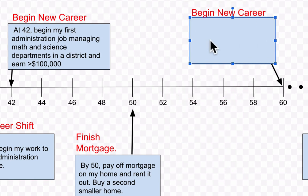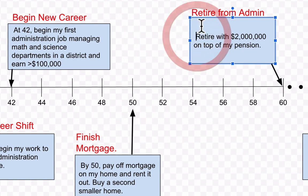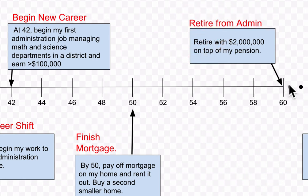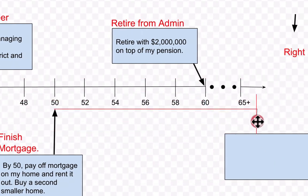Okay, what I can do is retire. So here this is my retirement. Yay! Retire from admin. So I had a career, I've done it, yay. So I want to say retire with two million dollars on top of my pension and leave it there. That's my goal, right? Let's say that's my goal. Shrink this down a little bit here, drag this down.